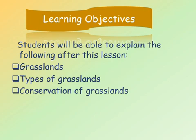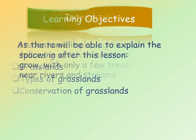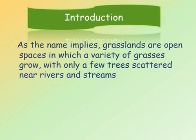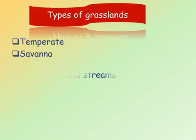As the name implies, grasslands are open spaces in which a variety of grasses grow, with only a few trees scattered near rivers and streams.